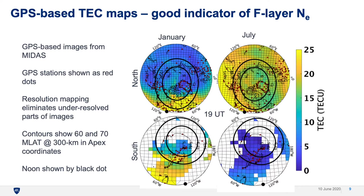Here we show images of total electron content from the MIDAS algorithm. GPS ground stations are shown in red; coverage is much better in the north. The 60 and 70 degree magnetic contours are shown in black and noon is indicated by black dots at the perimeter. In January, we can see a tongue of ionization forming from the American sector just post noon, pushing into the polar cap — and in the Southern Hemisphere a similar, even denser structure cutting across the western part of the continent. In July, the polar caps are much more uniform; the north has higher densities but lacks the strong structuring, and the south has very low and uniform densities.